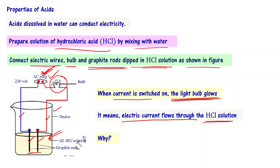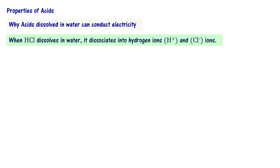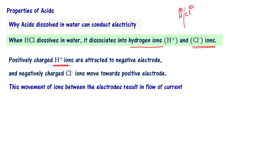Why does this happen? When HCl dissolves in water, it dissociates into hydrogen ions (H+) and chloride ions (Cl−). It means you have two kinds of ions in the solution. The positively charged H+ ions are attracted towards the negative electrode, and we have two graphite rods called electrodes — one positive electrode and one negative electrode.